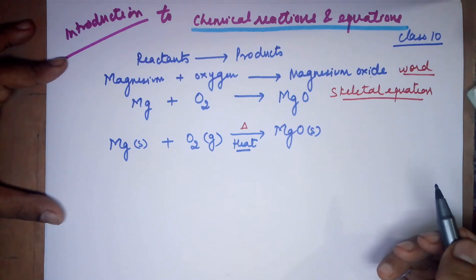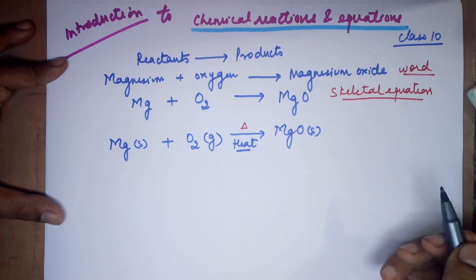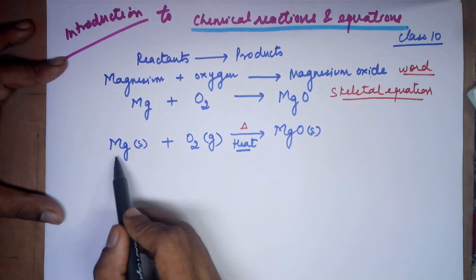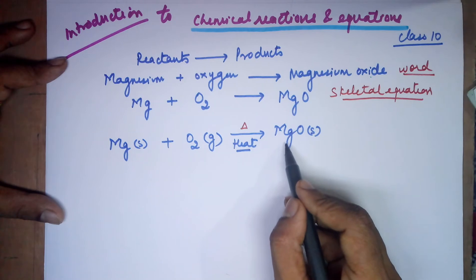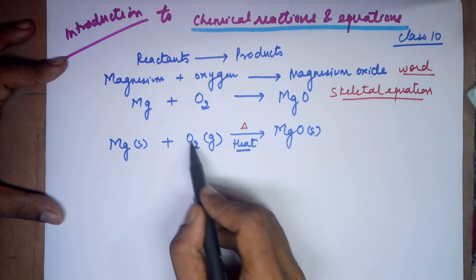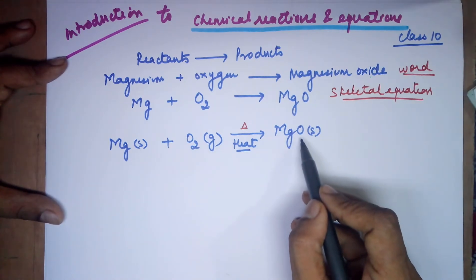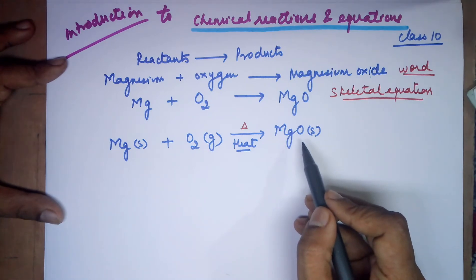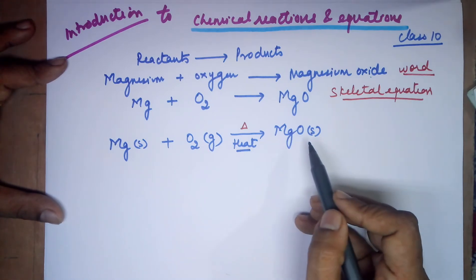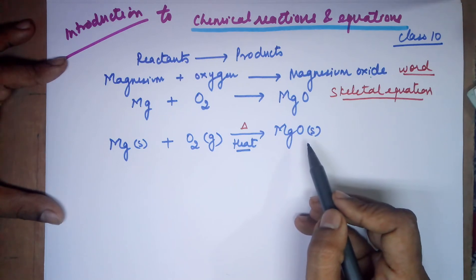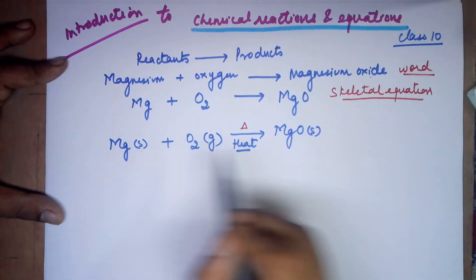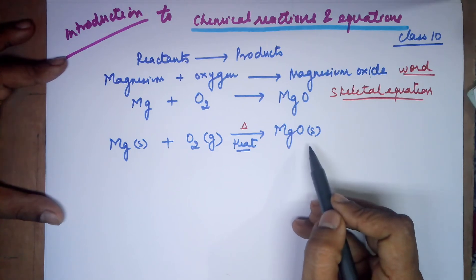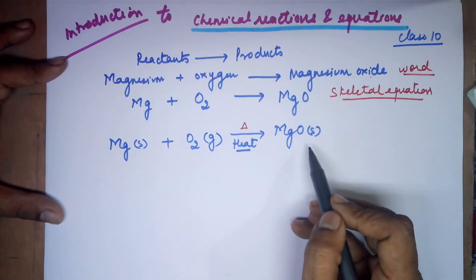Still, the reaction is not complete. The reaction is not complete because on both sides the element number should be the same. You have one magnesium here and one here, so magnesium is balanced. Whereas oxygen — you have two atoms on the reactant side and there is only one oxygen on the product side. Hence your law of conservation of mass is not satisfied. For any chemical reaction, the total mass of the reactants should be equal to the total mass of the products — that is the law of conservation of mass, as done in class 9.